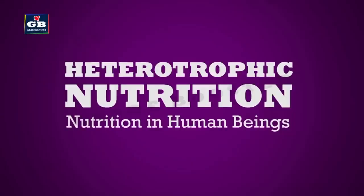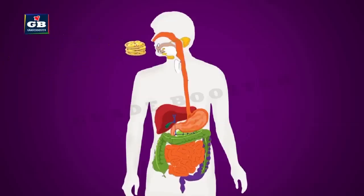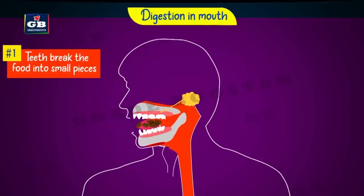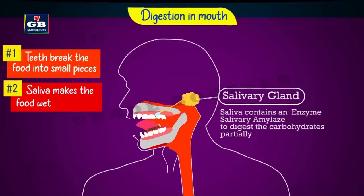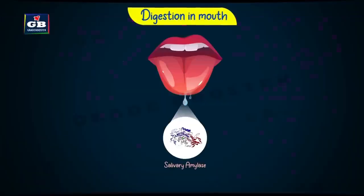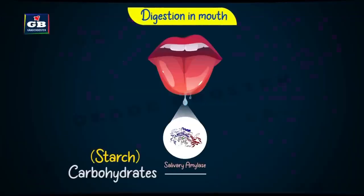Nutrition in human beings. Food enters our body through the mouth. Our digestive system begins with the mouth and ends with the anus. Different parts of the digestive system are arranged like a long coiled tube called the alimentary canal. The food inside the mouth is made into a paste by the action of teeth and saliva. Saliva has an enzyme called salivary amylase, which digests starch partially.